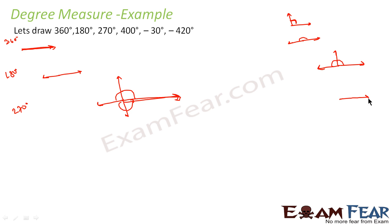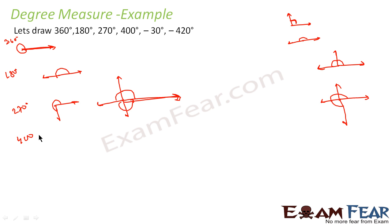For 270 degrees: starting at the initial line, rotate 90, then another 90 gives 180, and one more 90 gives 270 — so the angle sweeps three-quarters of a full rotation. For 400 degrees: 360 is one full rotation back to the start, then adding 40 more degrees gives an angle that goes slightly past the full rotation.